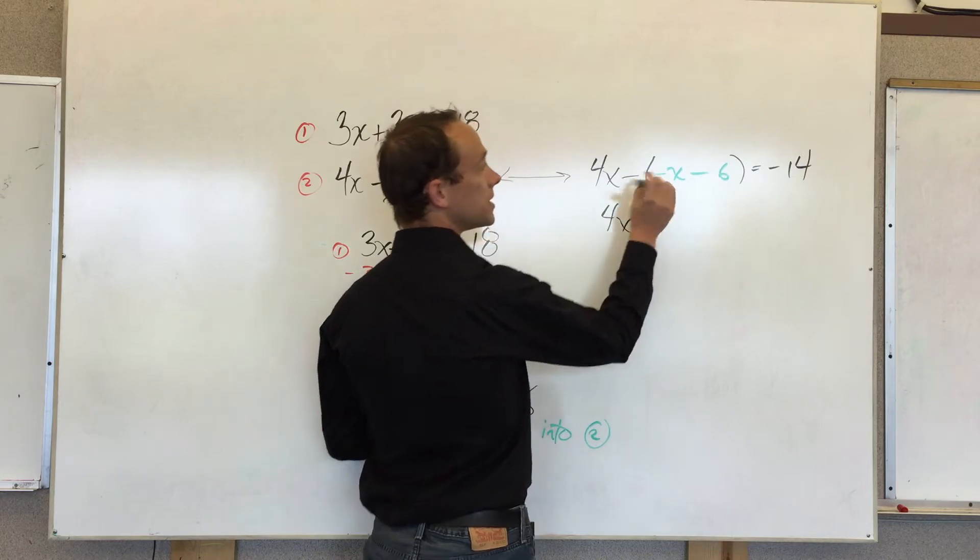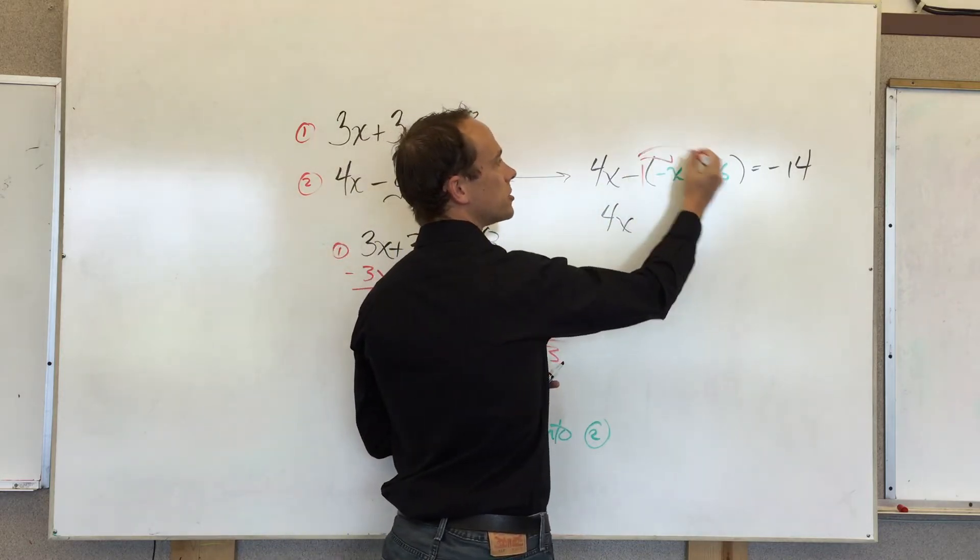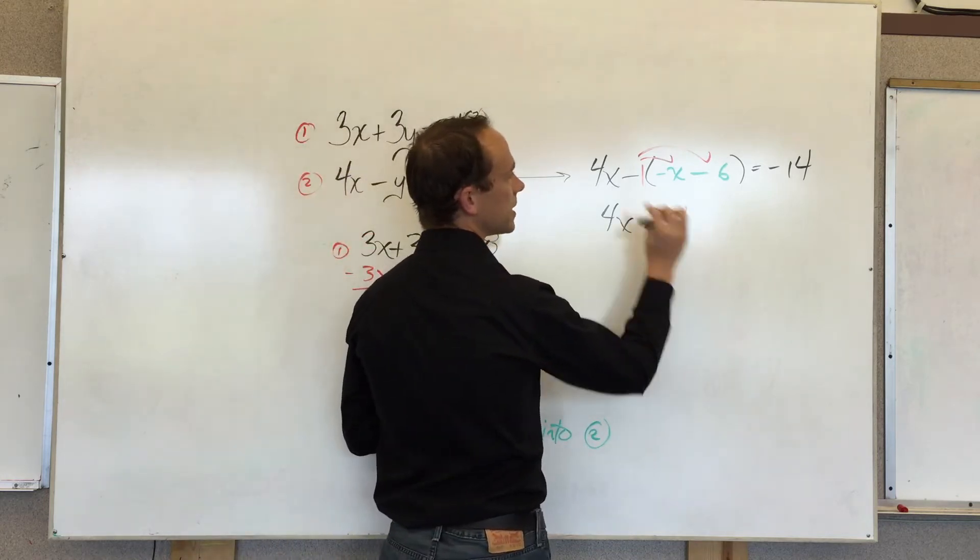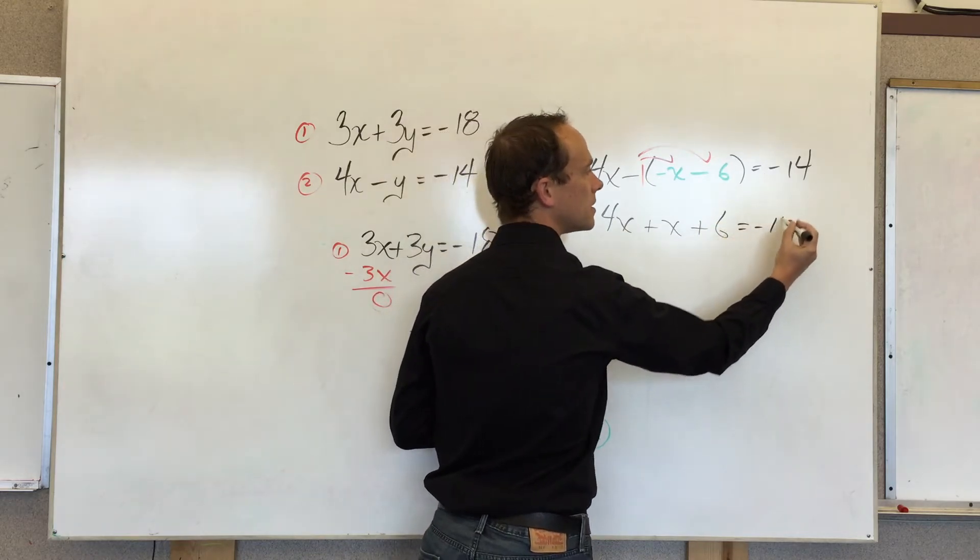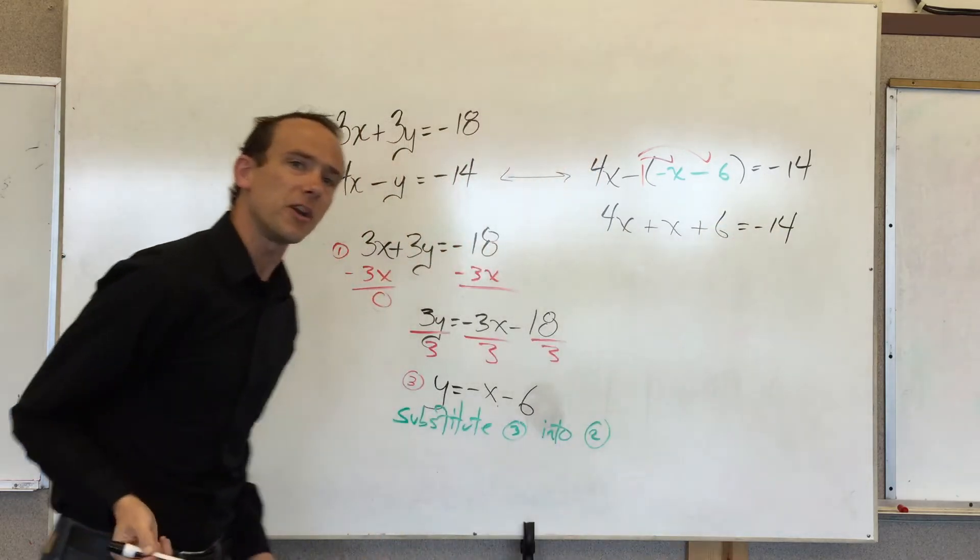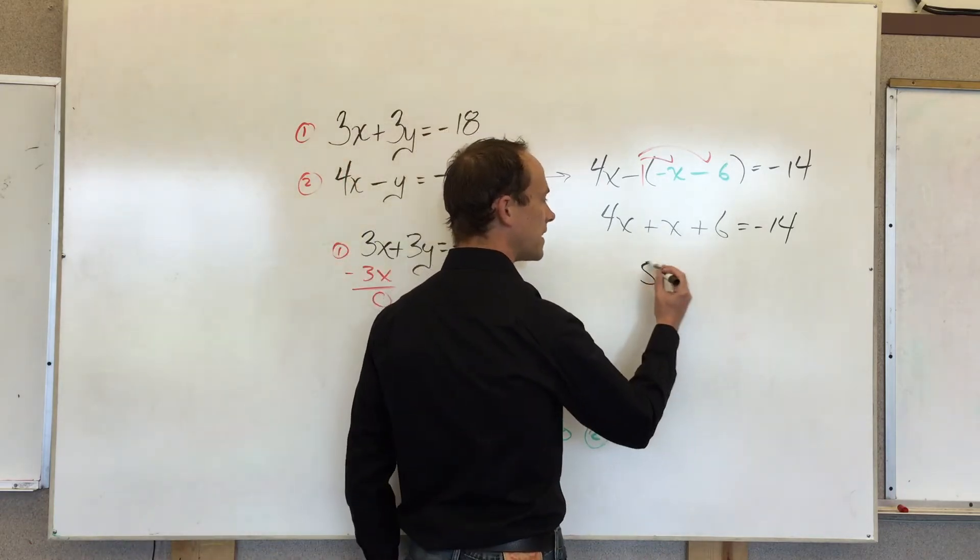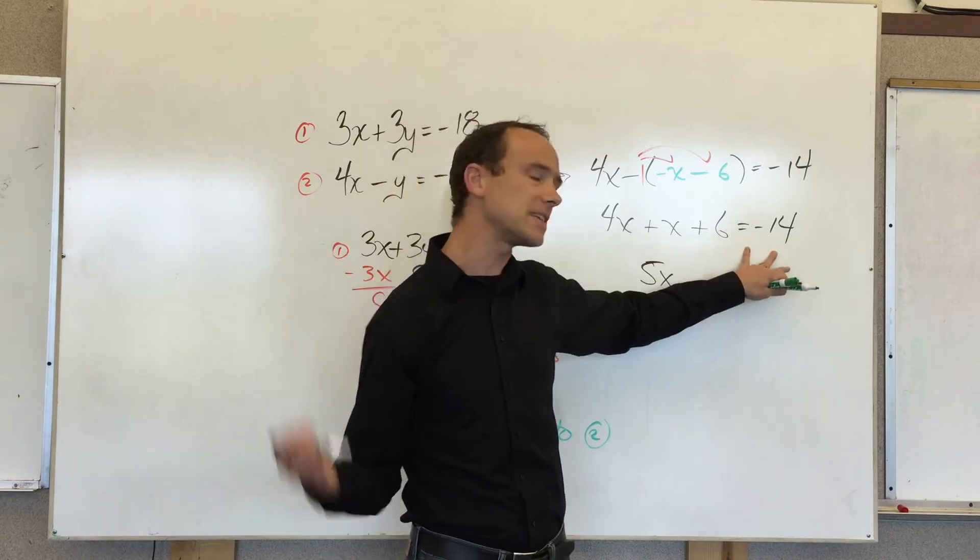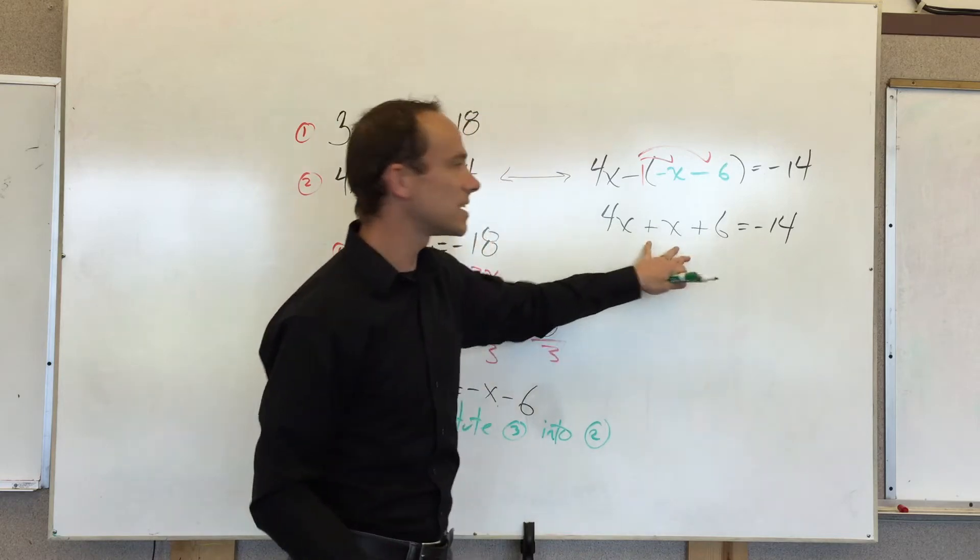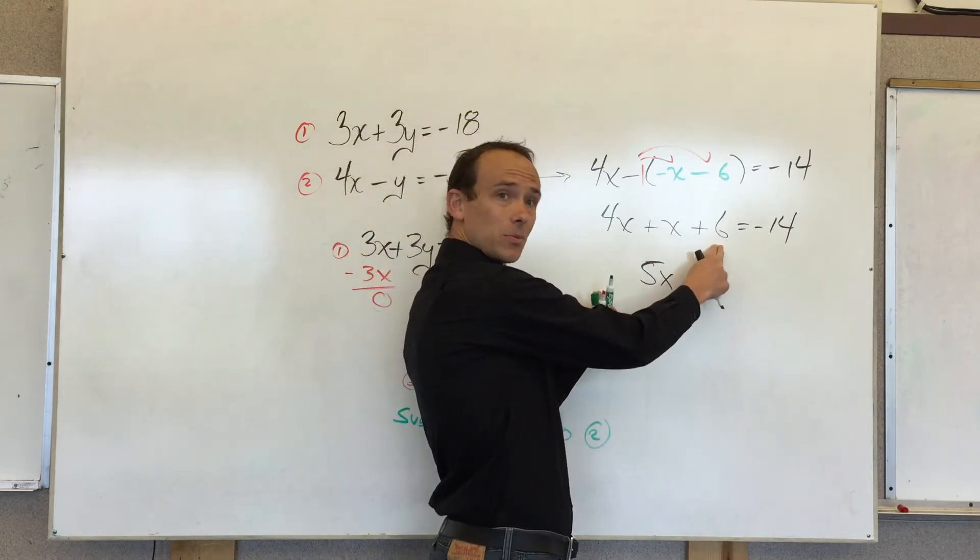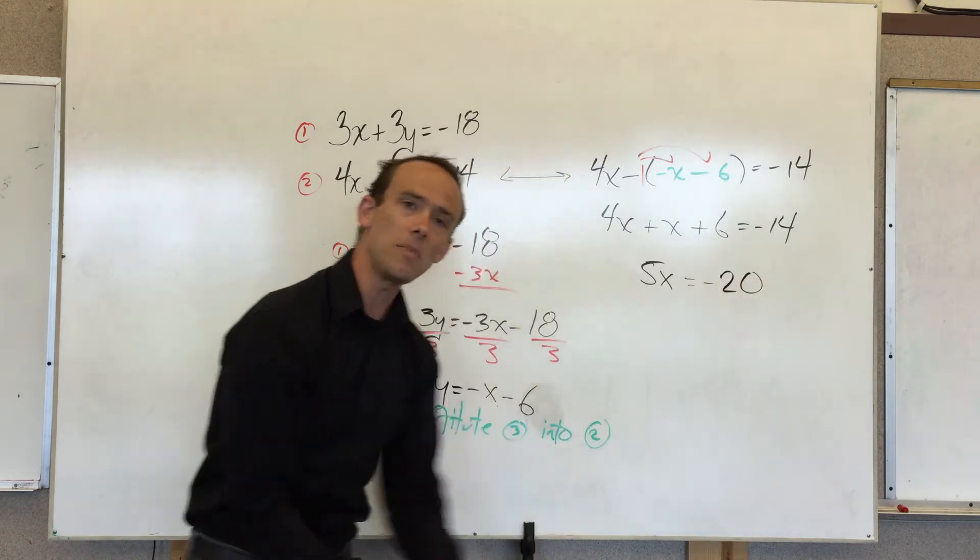I got 4x. This is really a negative 1. We don't write that, but I'm going to distribute the negative 1. And that's going to give me negative times a negative is positive. Negative times a negative is positive. Boom. We're having some very pretty numbers here today. I'm going to combine my left terms. That gives me 5x. I'm going to subtract 6 because I'm trying to isolate the variable. So I'm getting rid of all that stuff that is on the same side of the equal sign with that variable. So I got negative 20.